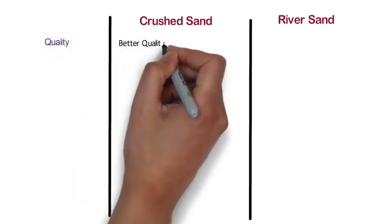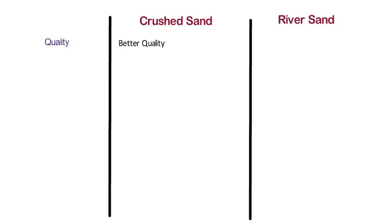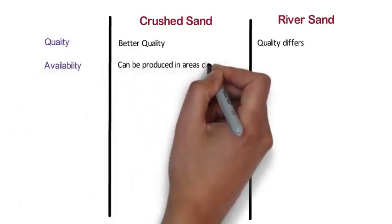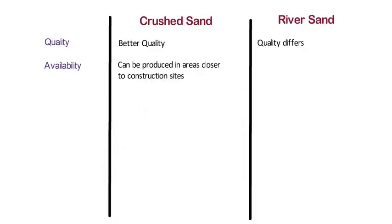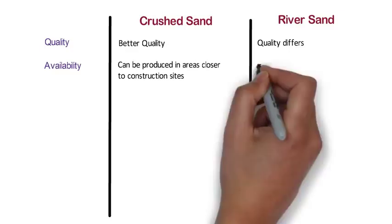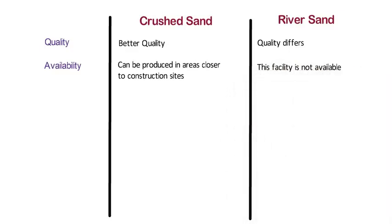Crushed sand has better quality as compared to natural sand because it is manufactured in a controlled environment, whereas the quality of natural sand differs. Availability: Crushed sand can be produced in areas closer to construction sites, bringing down the cost of transportation and providing an assurance of consistent supply. In the case of river sand, this facility is not available.